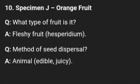Specimen J is orange fruit. What type of fruit is it? It is a fleshy fruit. The method of seed dispersal is by animals — it is eaten by animals because it is edible and juicy.